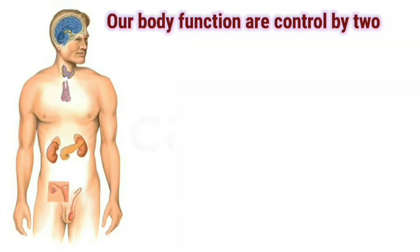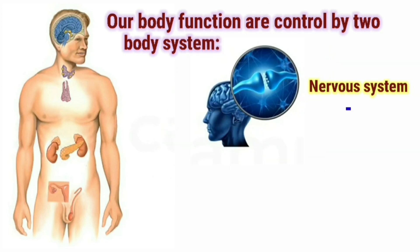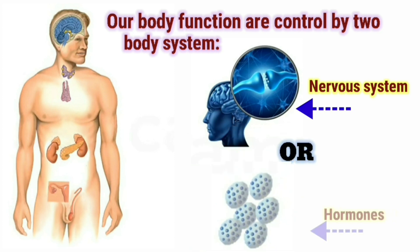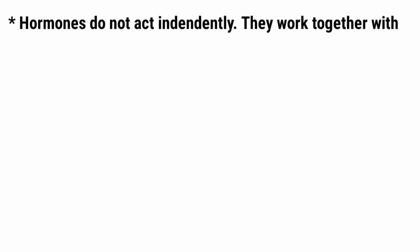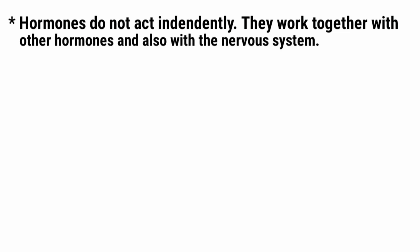Our body functions are controlled by two body systems: first the nervous system, and second hormones. Hormones do not act independently; they work together with other hormones and also with the nervous system.